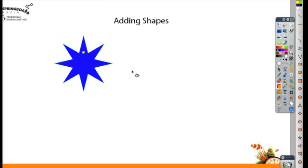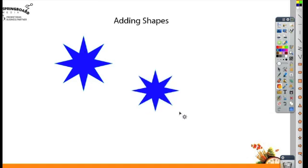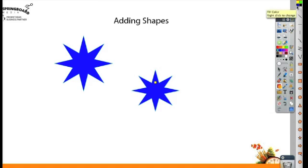Now, because you're still on the shape tool, every time you click it's making another one of that shape. Let's take a look at the shape for a second. The color that you see here is going to be the outside or outline color, and the color you see here is going to be the fill color.